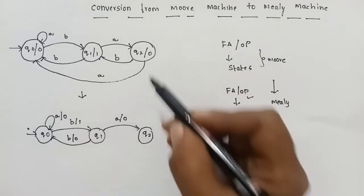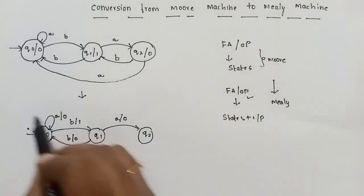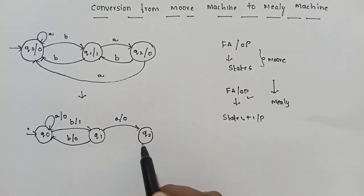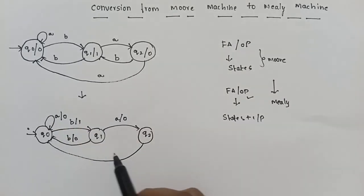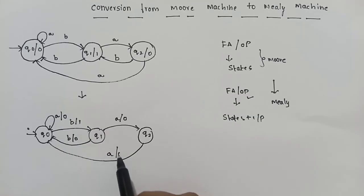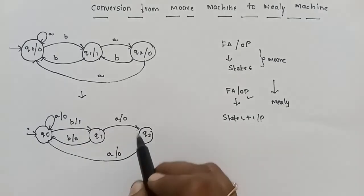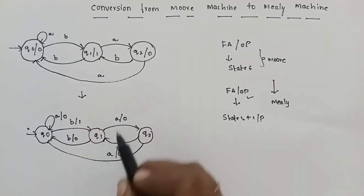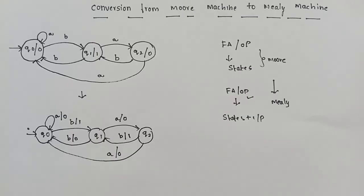Now for Q2 transitions: Q2 on input A goes to Q0 with output 0. Next, Q2 on input B goes to Q1 with output 1.